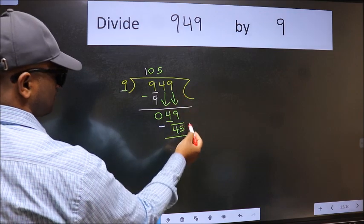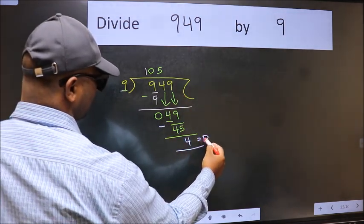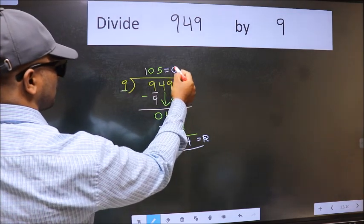No more numbers to bring it down. So we stop here. This is our remainder and this is our quotient.